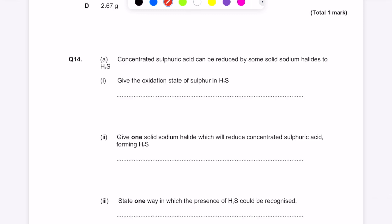Concentrated sulfuric acid can be reduced by some solid sodium halides to H2S. Give the oxidation state of sulfur in H2S. So remember, hydrogen ions are always plus one. The compound is always neutral, which means that the answer here is minus two.